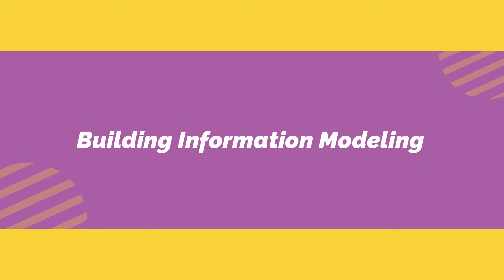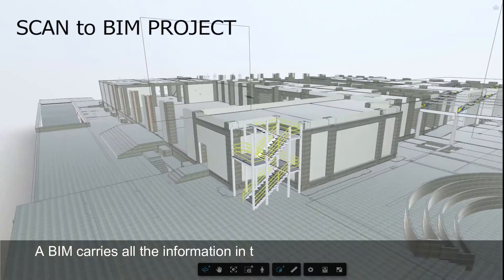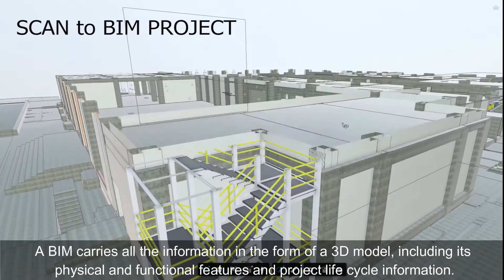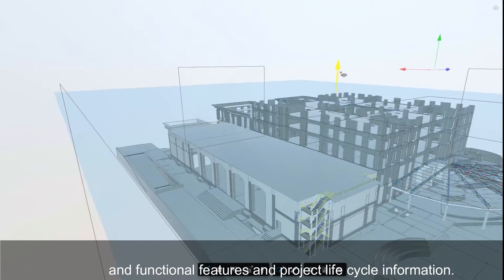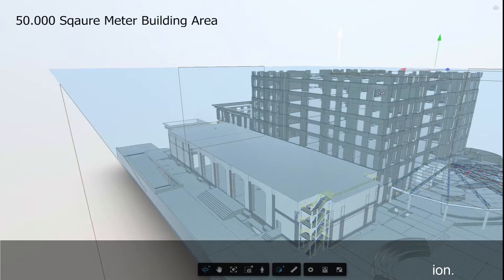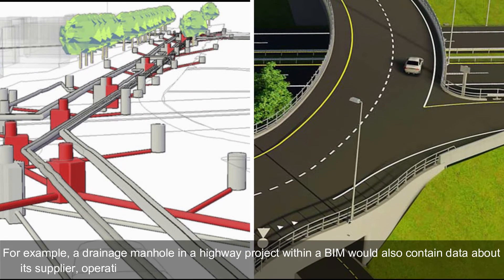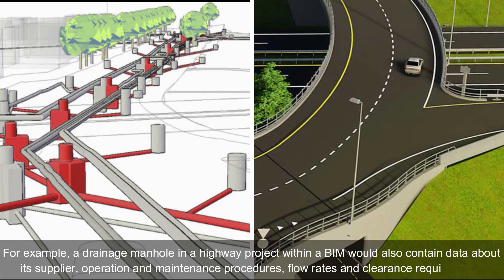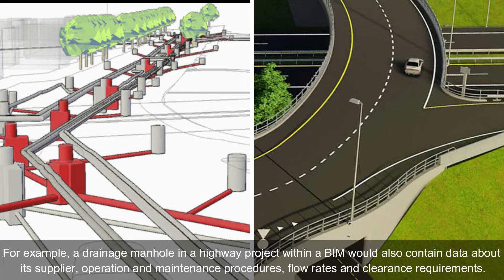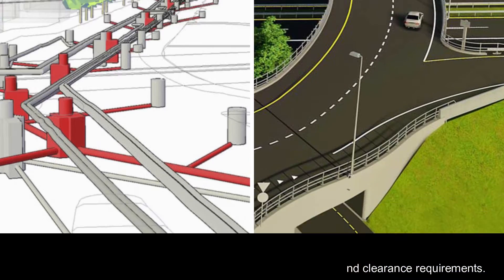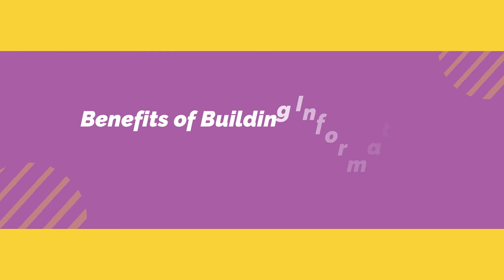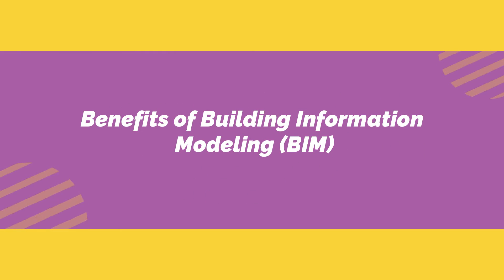A BIM carries all the information in the form of a 3D model, including its physical and functional features and project life cycle information. For example, a drainage manhole in a highway project within a BIM would also contain data about its supplier, operation and maintenance procedures, flow rates, and clearance requirements.